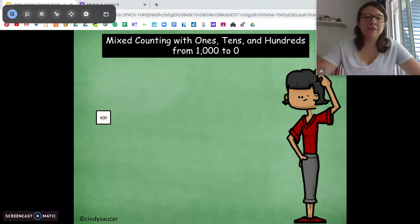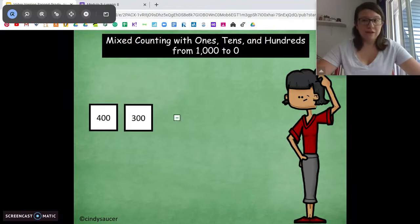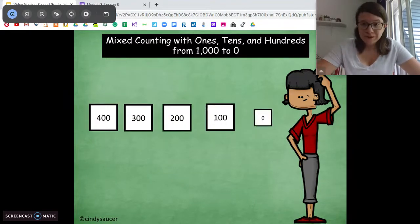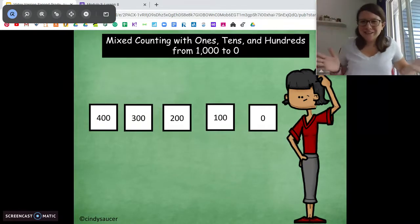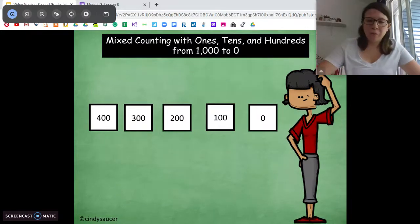Very good. Starting at 400, let's count backwards. 400, 300, 200, 100, zero. Good job. You just, guys, just counted backwards from 1,000 to 0 in like a minute. Awesome work.